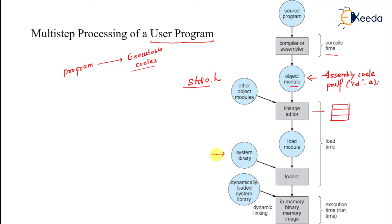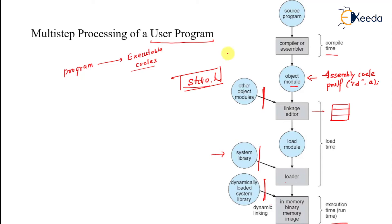Now we are loading the load module. What it does is it takes everything from the system library and then loads the program. Dynamically linking may also be done — dynamically loaded system library — and in memory a binary memory image is created, and this is execution time. So we have a compiler/assembler, then we have a linker, then finally we have a loader. That is the multi-step processing of a user program. Other object modules and system libraries come in at the linker and loader stages respectively.